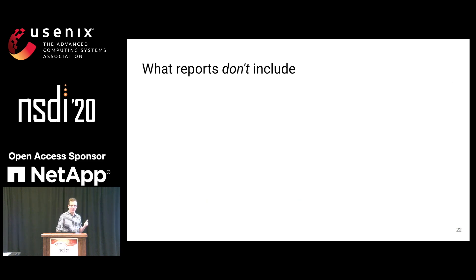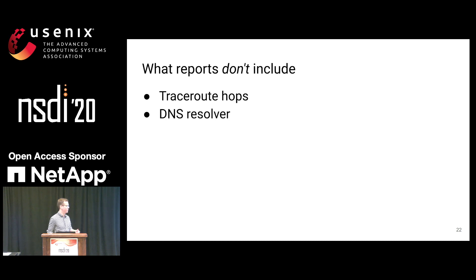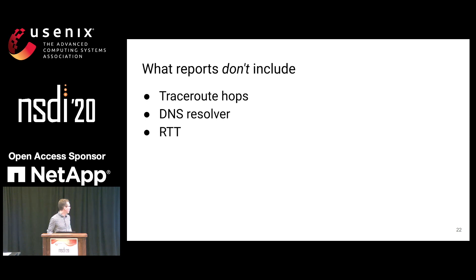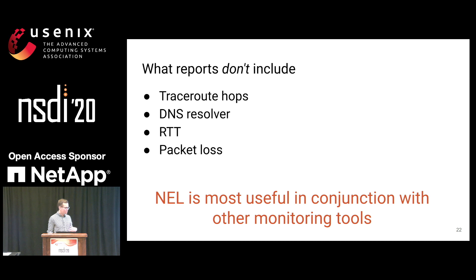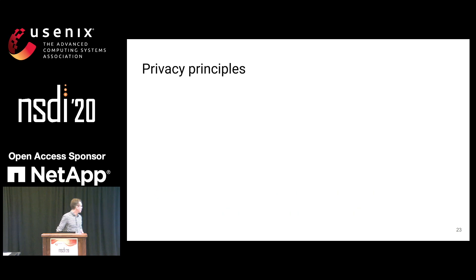It's important to note what these reports don't include. The browser isn't doing any trace routes or including any path information. It's not going to tell us which DNS resolver the user is using, which would be really helpful for detecting a DNS problem. It doesn't include anything about RTTs or packet loss. If you want that, you need other tools. What we've found is that NEL is really useful for detecting problems initially that are affecting your service, but you need other tools to dig in and figure out what's going on.